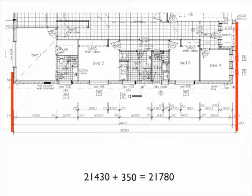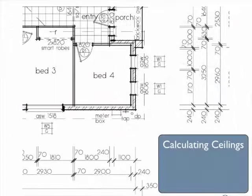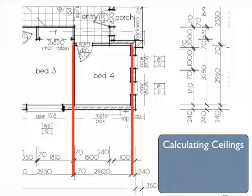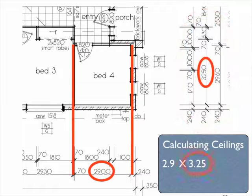Let's see how we can calculate the area of ceilings. Let's take for example bedroom 4. We see here that one wall of the bedroom is 2.9 metres and the other seems to be 3.25 metres.